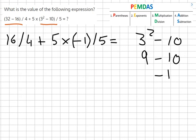And then we deal with the multiplication and division. So 16 over 4 equals 4 plus 5 times minus 1 equals minus 5 over 5 equals. And then we do 4 plus minus 5 over 5 which equals minus 1.